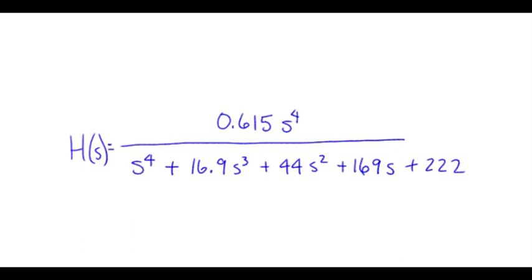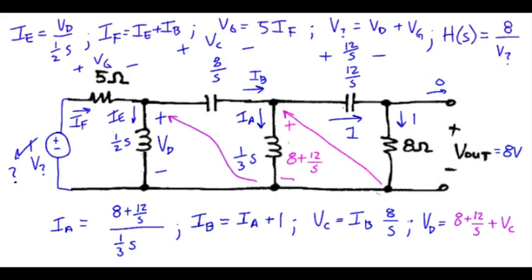Overall, the transfer function is a fourth order polynomial on top, fourth order polynomial on the bottom. Just to confirm that with the original circuit, we had a total of one, two, three, four independent energy storage elements. So that would normally lead to a fourth order result when you're done.